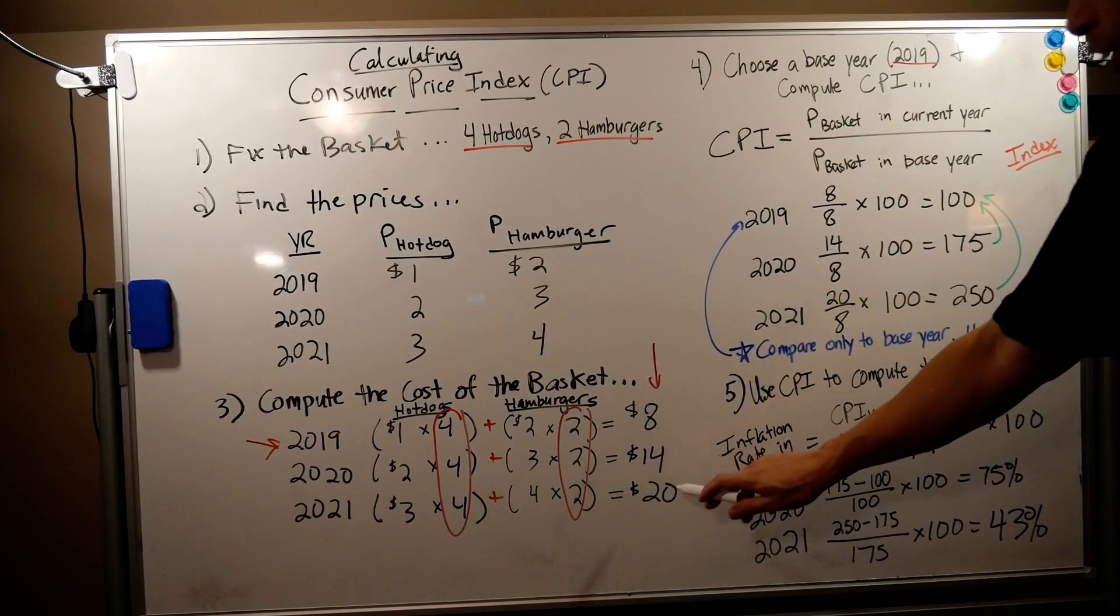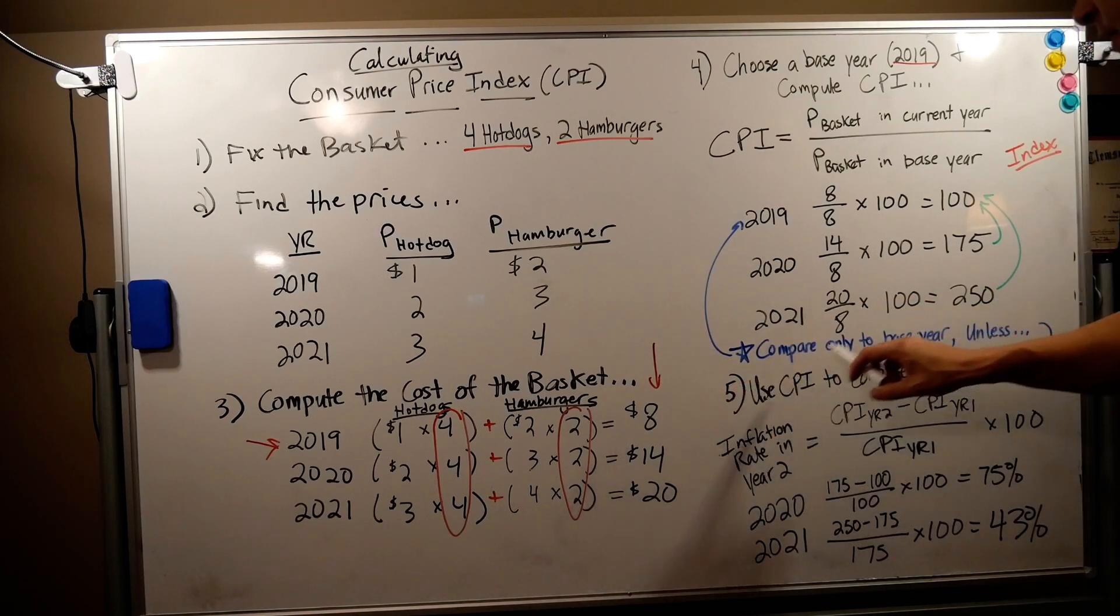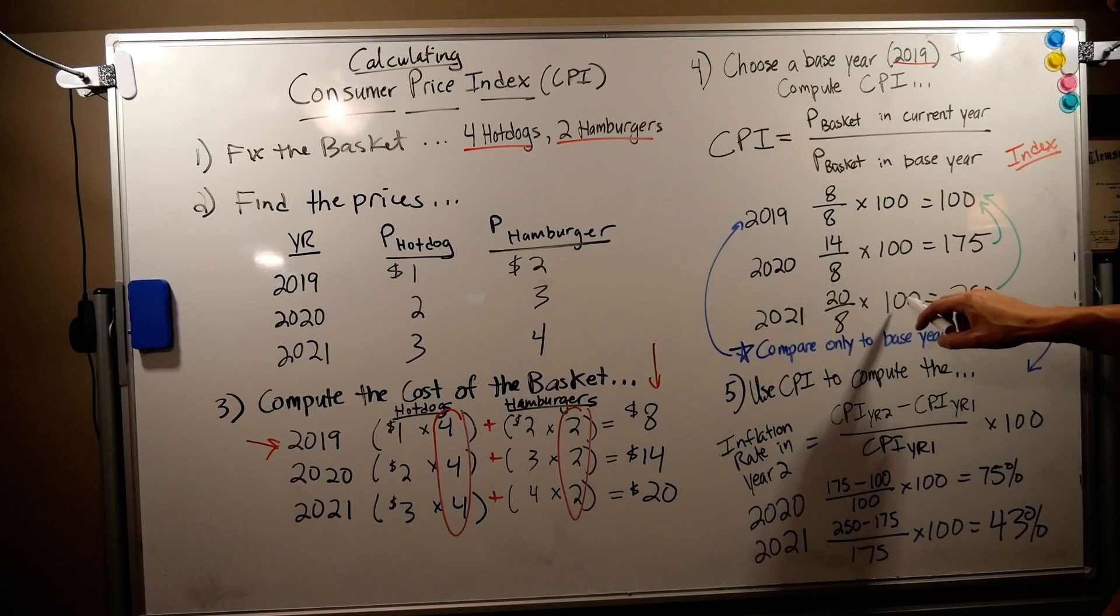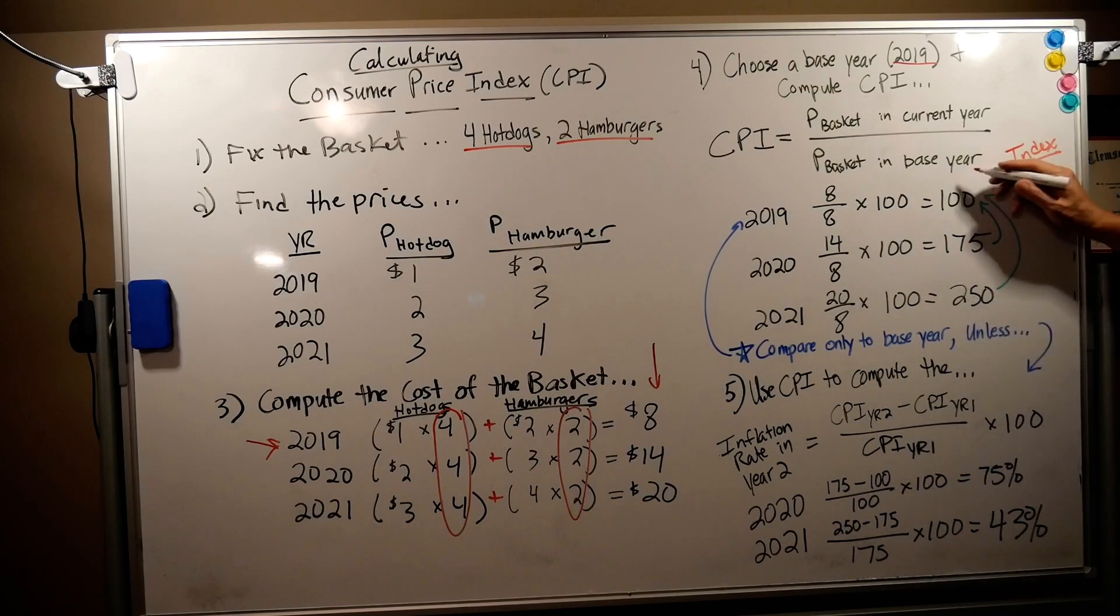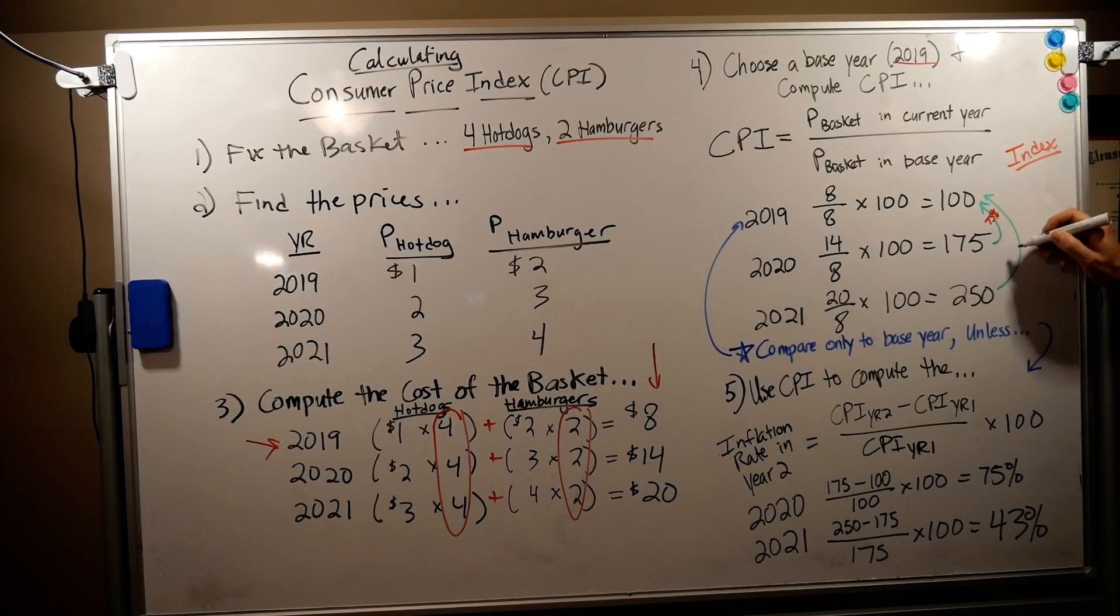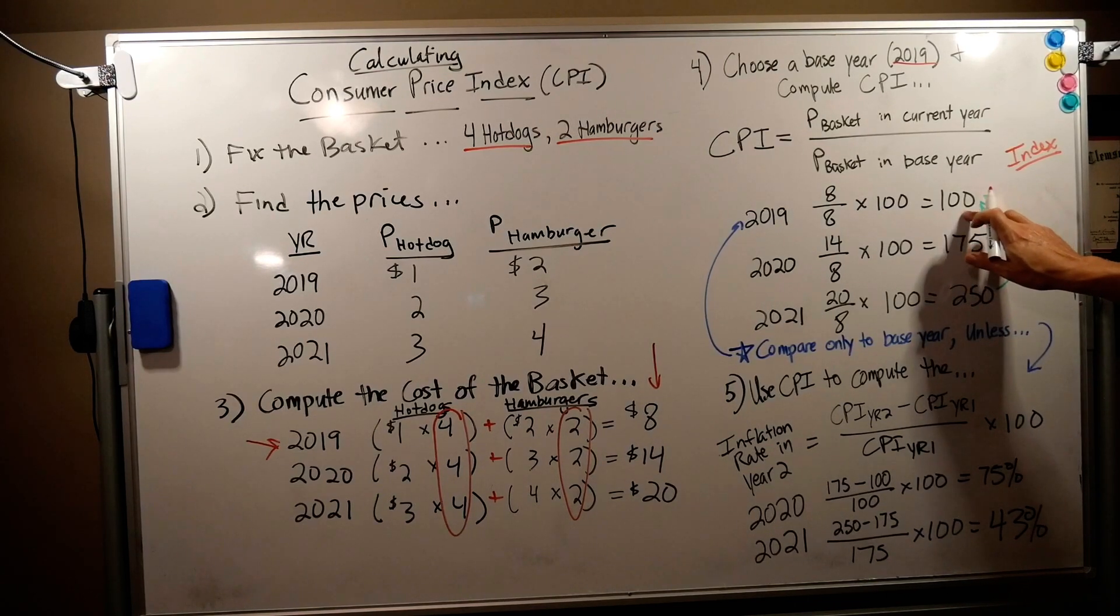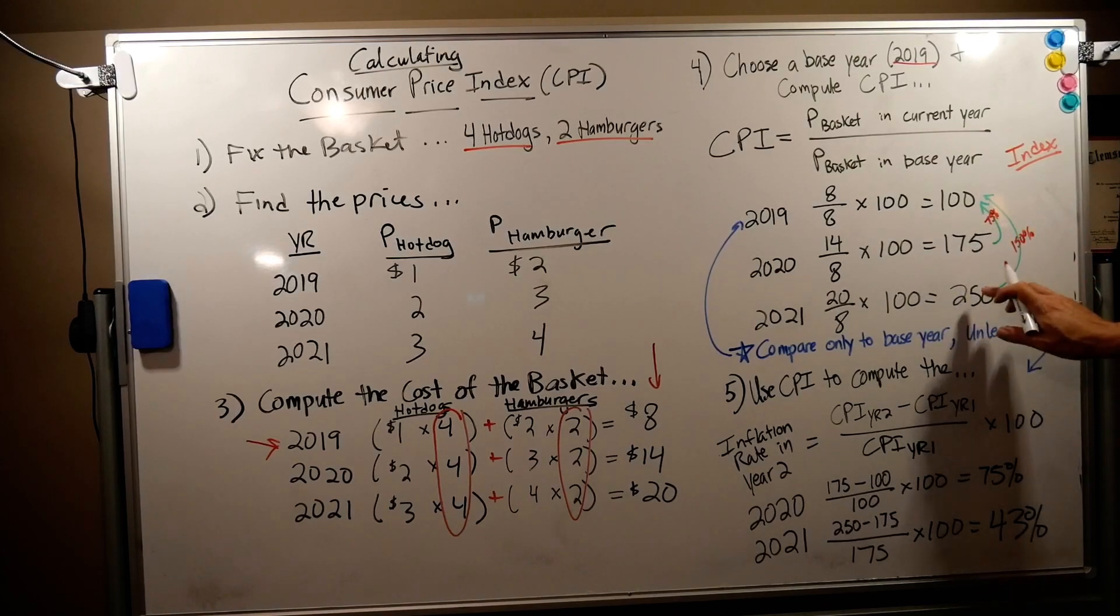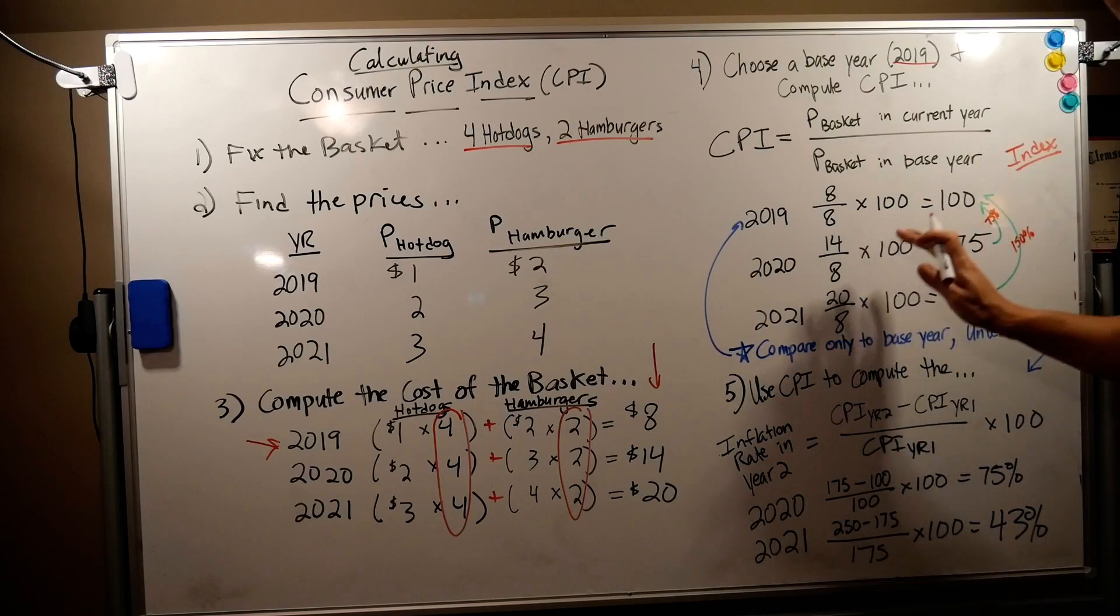2021, we take our current market basket cost which is $20 and we divide it by our base year market basket cost which is $8, multiply by that 100 and put it into an index and we see that our new score is 250. So we know between 2019 and 2020 there was 75 percent inflation and between 2019 and 2021 there was 150 percent inflation. How do I get that? You take your current CPI score and subtract out your base. So 175 minus 100 is 75 percent. 250 minus 100 is 150 percent. I can compare back to the base year, compare back to the base year, compare back to the base year.